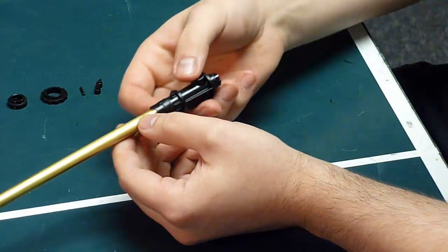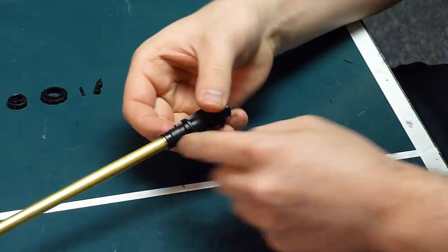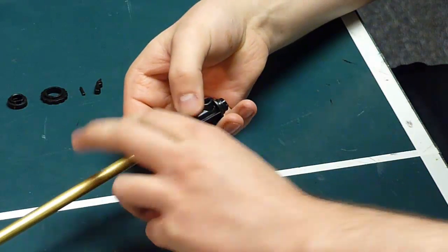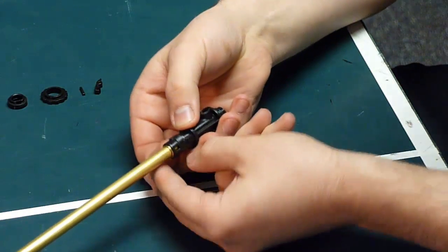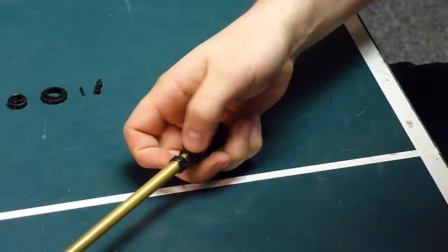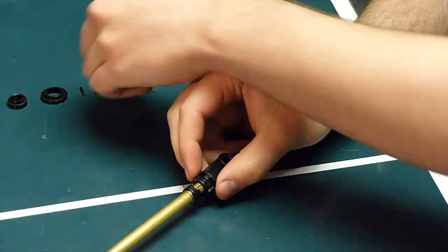Now we're ready to remove the hop-up housing. To do that, you'll see a clip on the bottom of your barrel here. You need to get your fingernails under the edge of that and pull it up. Don't let it fly away like that.